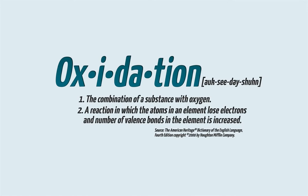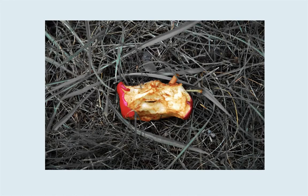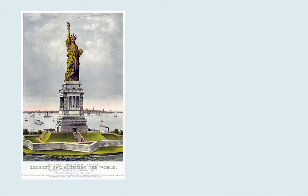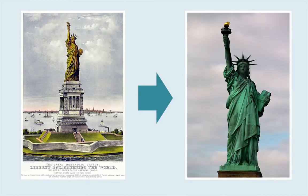We can see oxidation every day. The browning of the inside of an apple is an example of slow oxidation, as is the green color on copper. The Statue of Liberty was originally copper-colored, but oxidation turned the brownish metal to the green we recognize today.